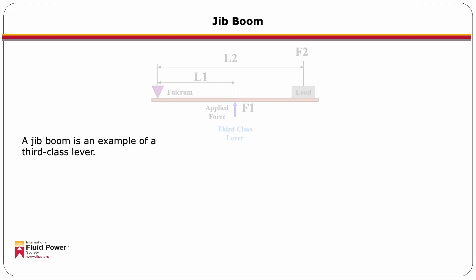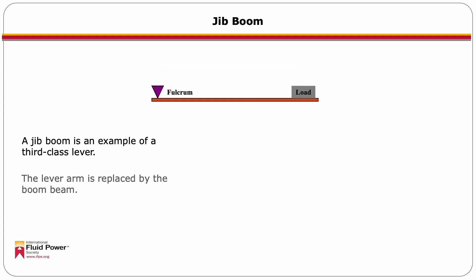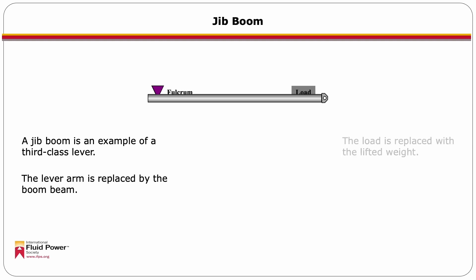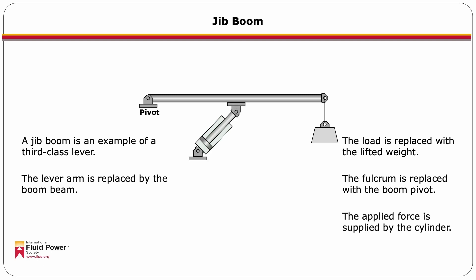A jib boom is an example of a third-class lever. We're going to replace the lever components with parts of the jib boom. The lever arm is replaced with the boom arm itself, the load is replaced with the lifted weight, the fulcrum is replaced with the boom pivot, and the applied force is replaced by the cylinder.